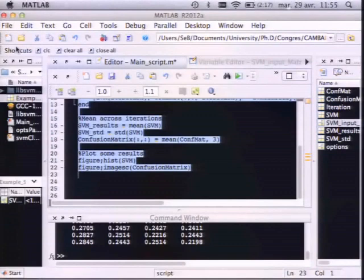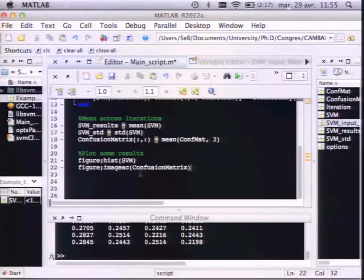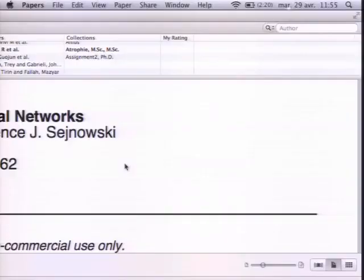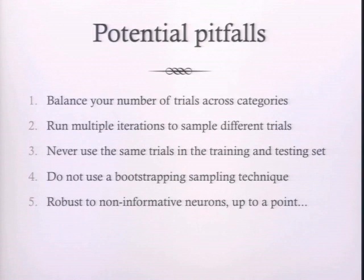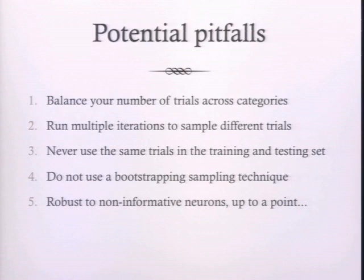You can do that at home with the toolbox. Let me end with a few potential pitfalls of using SVM. First, always balance your number of trials across categories. The script written by Rishi does this for you — it looks up the number of trials per category and if there's a non-equal number, it randomly samples from the larger category to downsample to match the smaller category.